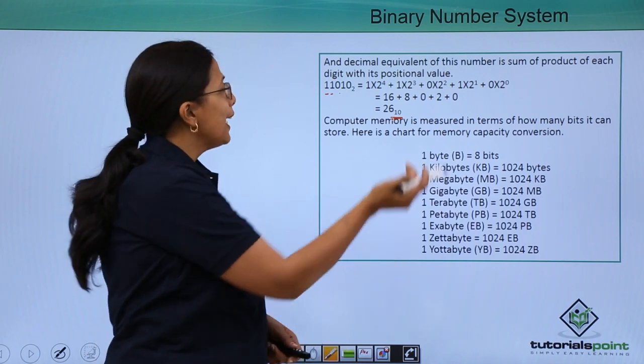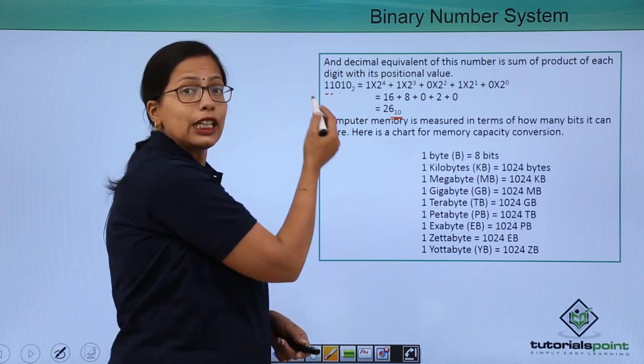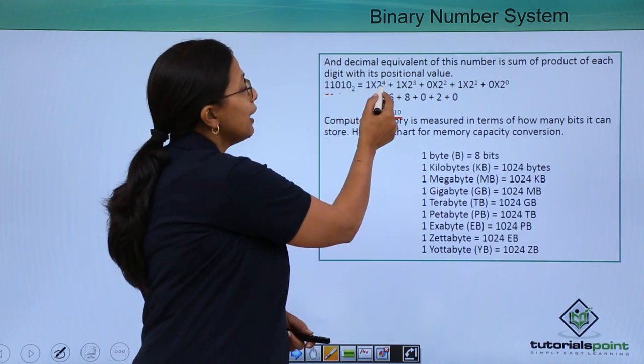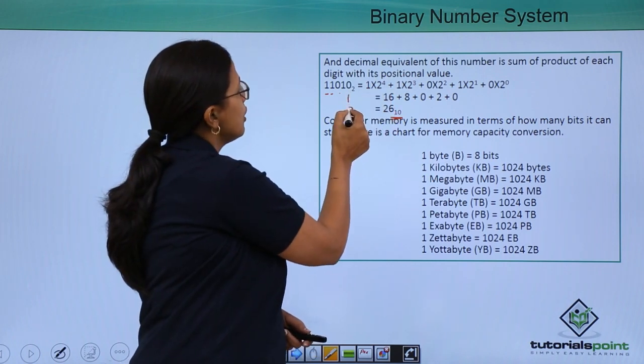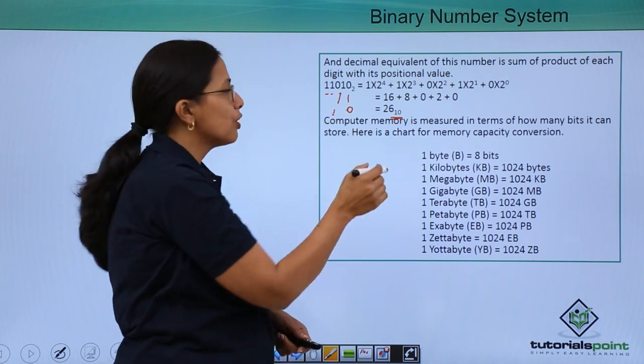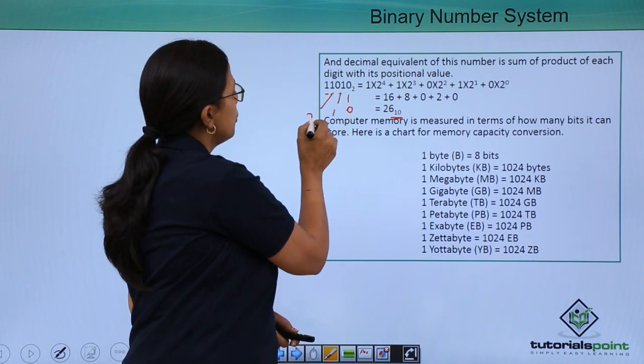We have to take each digit, each bit and multiply it by its positional value. So, this is 0, this is 1. I am writing the positional value. This is 2, this is 3 and this is 4.